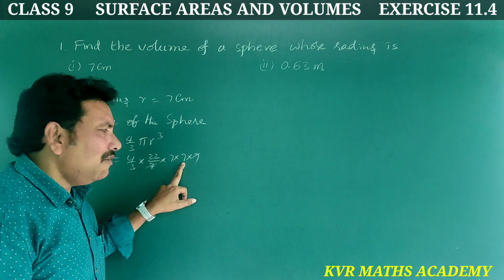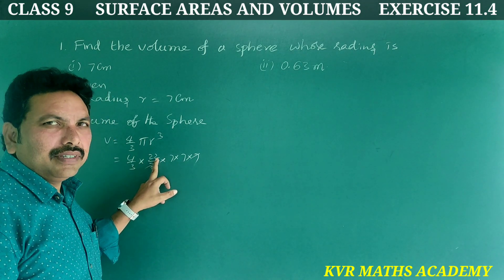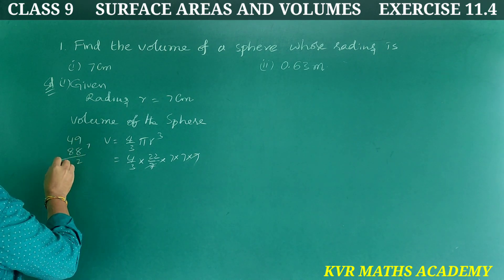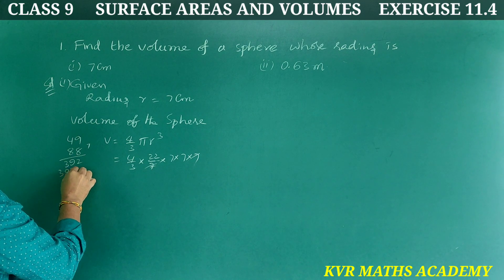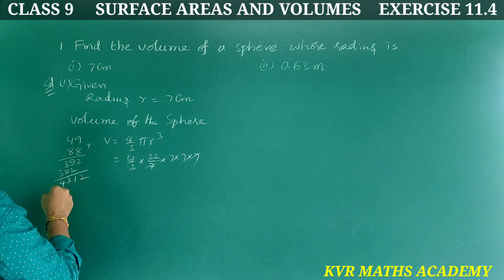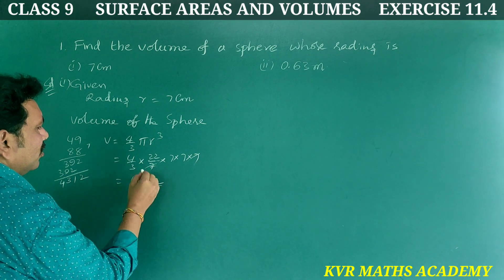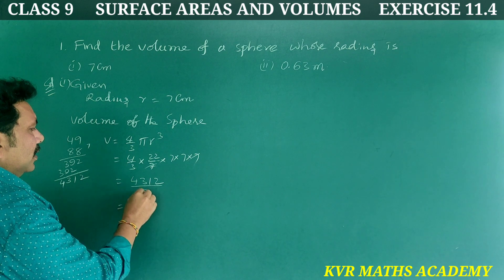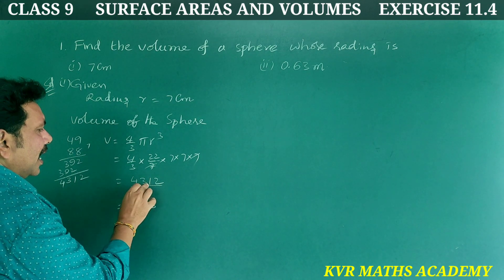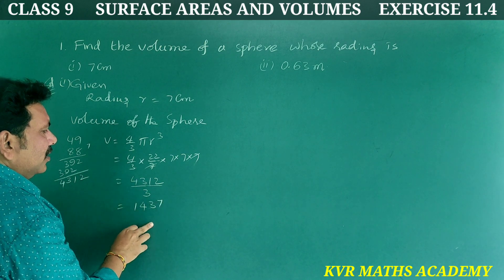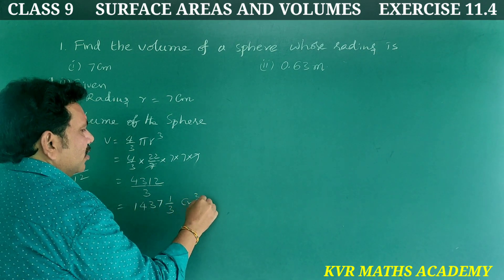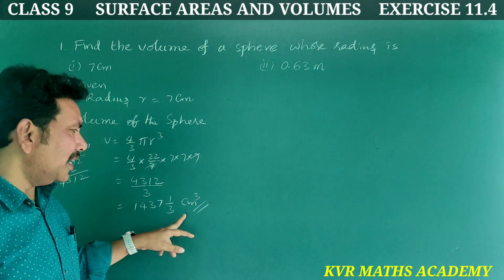The 7 cancels out. Computing: 4 × 22 = 88, then multiplying 7 × 7 = 49, continuing the multiplication gives 1437 and 1/3 cubic centimeters.